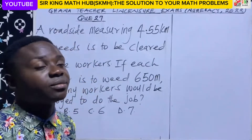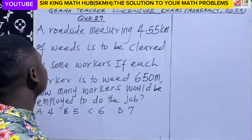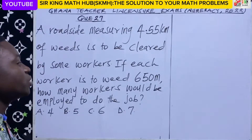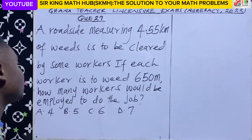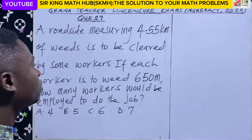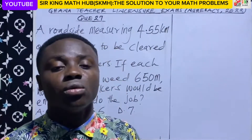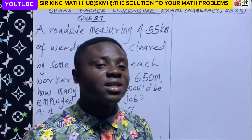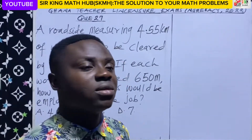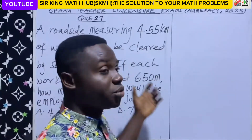Question number 27. A roadside measuring 4.55 kilometers of weeds is to be cleared by some workers. If each worker is to weed 650 meters, how many workers would be employed to do that job? Anytime you are faced with a work problem and you don't know what to do, try to create a similar situation and devise a plan, then use that plan to solve the main problem.